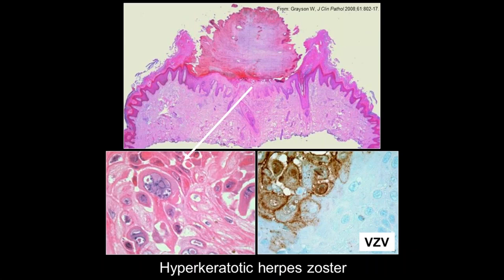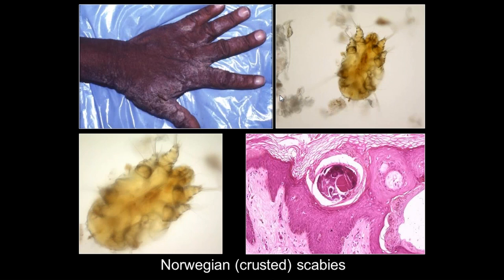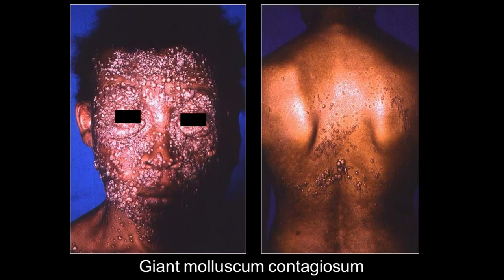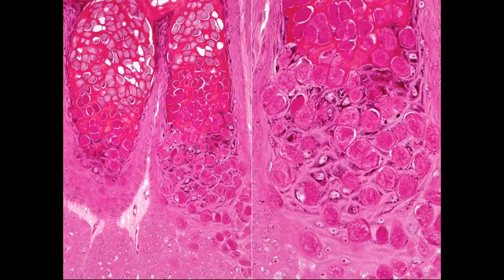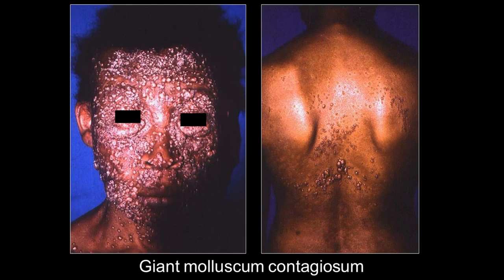Scabies in its crusted or Norwegian form is not uncommon and has a strong association with immune compromise including HIV AIDS. Patients with HIV AIDS can develop very large, giant lesions of molluscum contagiosum — an extremely disfiguring example — but the histology is still the same as molluscum, which emphasizes how important it is to do the biopsy. The other important lesson is that an adverse drug reaction should always be on one's radar screen, including after initiation of antiretroviral therapy, which can produce morbilliform drug eruptions or even Stevens-Johnson syndrome.